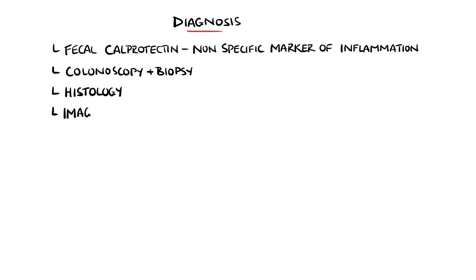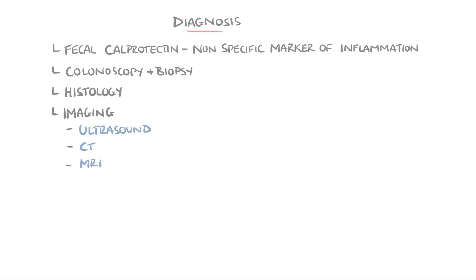Imaging such as ultrasound, CT, and MRI can be used in some cases, particularly in Crohn's disease that is affecting other parts of the GI tract.